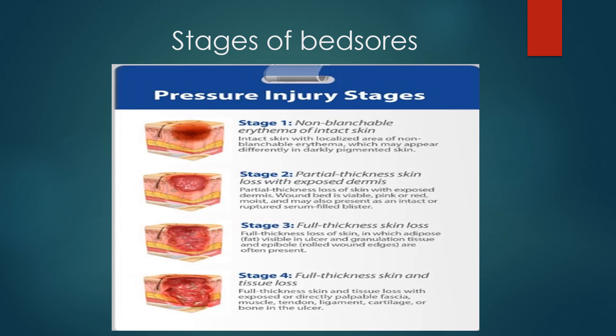Stages of bed sore: pressure injury stages consist of 4 stages. Stage 1 is non-blanchable erythema of intact skin — the intact skin with a localized area of non-blanchable erythema; it may appear differently in darkly pigmented skin. Stage 2 is partial thickness skin loss with exposed dermis; the wound bed is viable, pink or red and moist, and may also present as an intact or ruptured serum-filled blister. Stage 3 is full thickness skin loss, with adipose visible in the ulcer and granulation tissue and epibole often present.